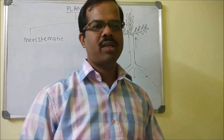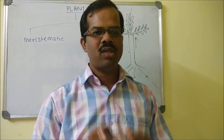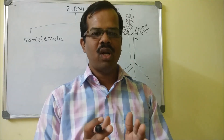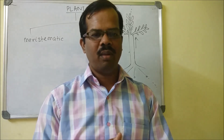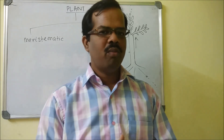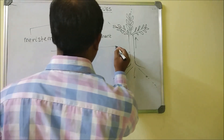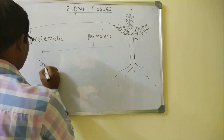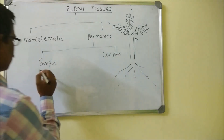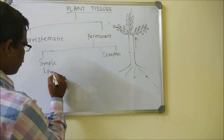Permanent cells remain at the same size throughout their life because they normally do not grow. They are mostly used for storing food, protection of the plant from the external environment, and giving support to the plant. These are divided into two categories: simple permanent tissues and complex permanent tissues. Simple permanent tissues are further divided into protective tissues and supportive tissues.